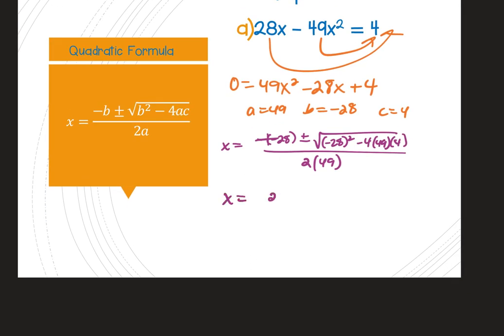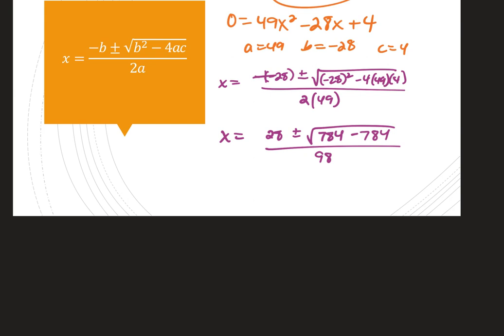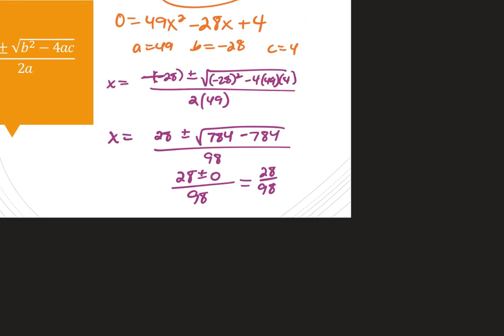28² = 784 and 4 × 49 × 4 = 784, so the discriminant is 0. This gives x = (28 ± 0) / 98 = 28/98. Since it's plus or minus 0, there is only one answer — not two. Reducing: 7 goes into both 28 and 98, giving 4/14, which reduces to 2/7.